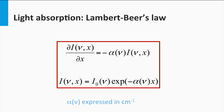For a solar cell, we would like the absorption to be 100%. In this condition, the absorber would be called optically thick. This means the transmission is 0%. From Lambert's law it can easily be seen that this can be accomplished by either large values for the thickness d, so very thick films, or large values for the absorption coefficients.